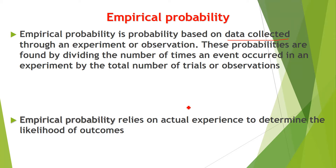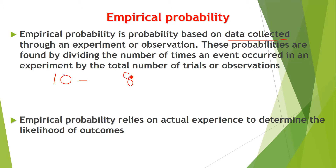These probabilities are found by dividing the number of times an event occurred in an experiment by the total number of trials or observations. For example, suppose there were 10 patients whose diastolic blood pressure was 80 (normal), and 12 patients whose diastolic blood pressure was 110.